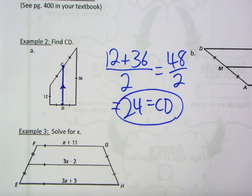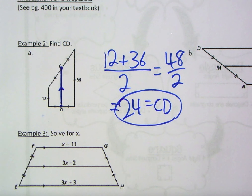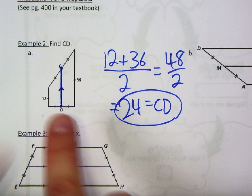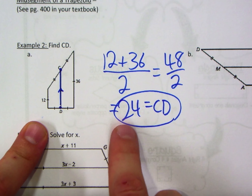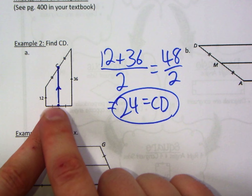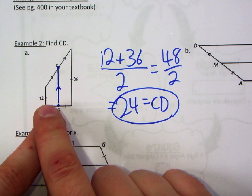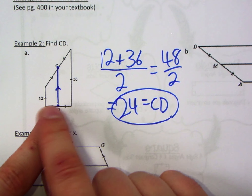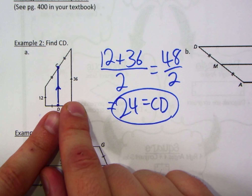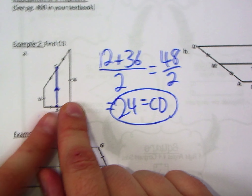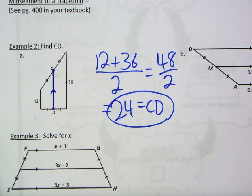Let's build number sense here — is 24 a reasonable answer? It's less than 36 and greater than 12. More precisely, 12 is 12 units less than 24, and 36 is 12 units more than 24. So 24 is truly in the middle of them, confirming it's correct.